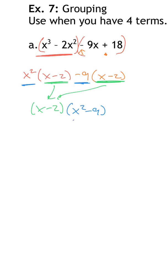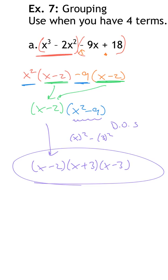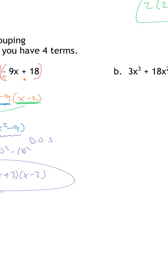Looking at (x − 2)(x² − 9) — x² − 9 is a difference of squares since x and 3 are both perfect squares. So that factors further into (x + 3)(x − 3). Bring down the (x − 2), giving the completely factored form: (x − 2)(x + 3)(x − 3). When doing grouping, always check if anything can be factored further.